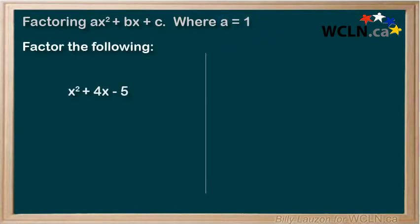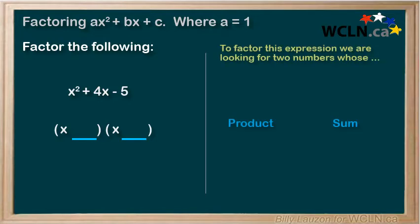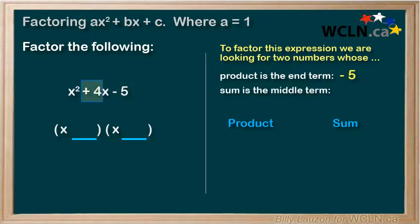To factor the following trinomial, we know we are looking for the product of two binomials. So we can set up our brackets early to give us some space to work. The front term of the trinomial is of degree 2, and has a leading coefficient of 1, in front of the x². So we can put an x in the front of each bracket. We now need to find the numbers that go in the back of each bracket. To find these, we are looking for two numbers whose product is the end term, -5, and whose sum is the middle term, +4.